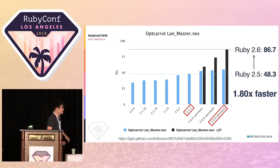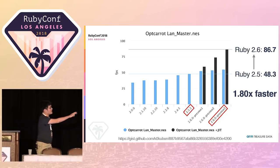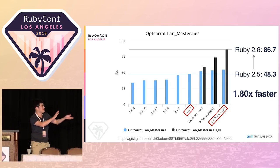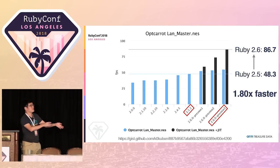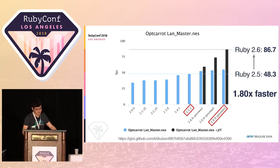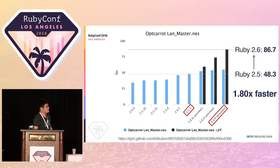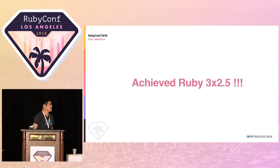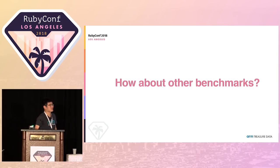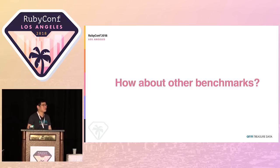The three black bar graphs represent this year's progress. The left six bars cover six years. This year we had a lot of progress for Ruby interpreter performance. We've already achieved Ruby 3 times 2.5 — only 0.5 remaining. But how about other benchmarks? It's just a Famicom, and I guess nobody is running a Famicom emulator in production.